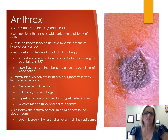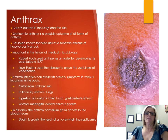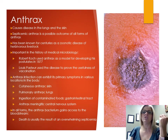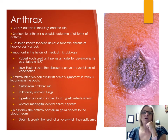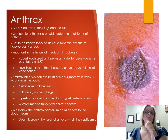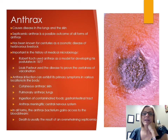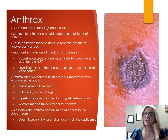Anthrax is a zoonotic disease caused by Bacillus anthracis that can exhibit primary symptoms in different areas of the body. There are three forms: cutaneous, pulmonary, and ingested anthrax. It can also cause anthrax meningitis, infecting the central nervous system. Any form can progress to an overwhelming septicemia resulting in death. Anthrax is transmitted via contact, inhalation, or ingestion. It has been known for centuries as a disease that strikes herbivores. Koch used anthrax as a model for developing his postulates, and Pasteur used it to prove the usefulness of vaccination.